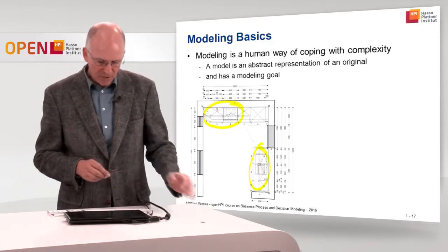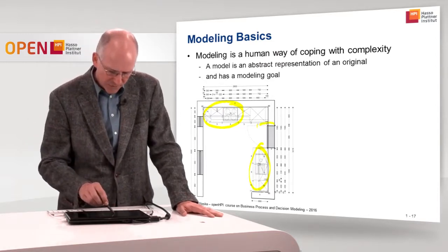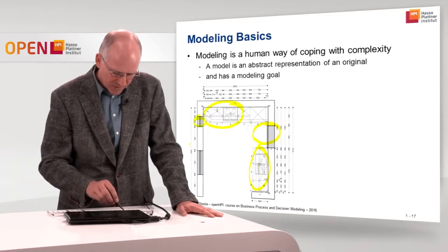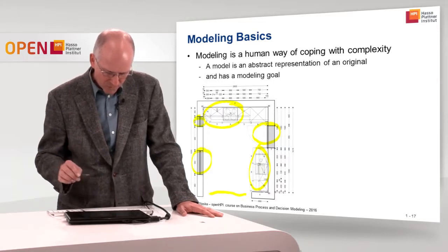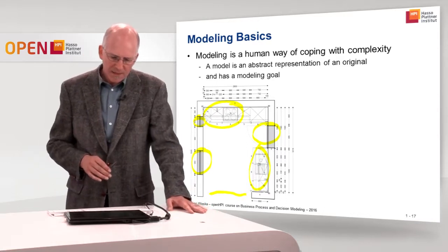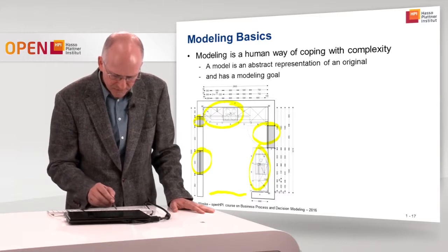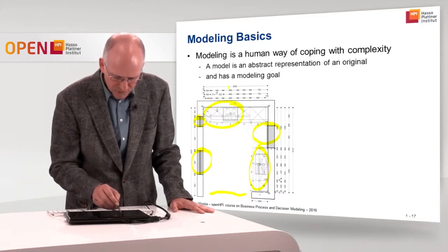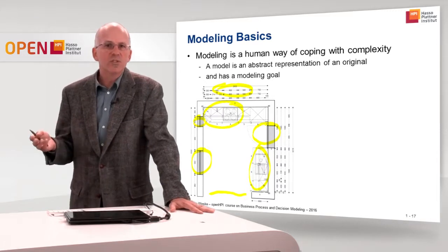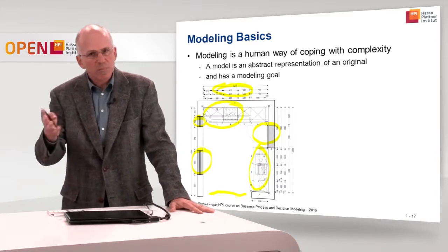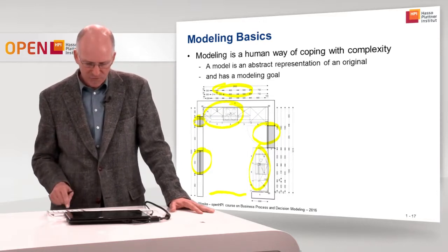You also see elements of the real world that are represented in this model. Here we have a door, here there are windows, and here there is an opening where there is no wall. There are also very detailed measurements here — these measurements help engineers to build the kitchen appliances so that they will fit exactly this room.